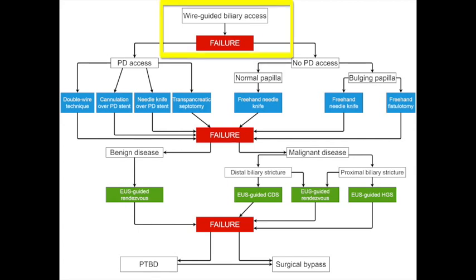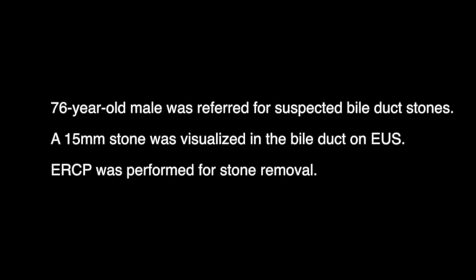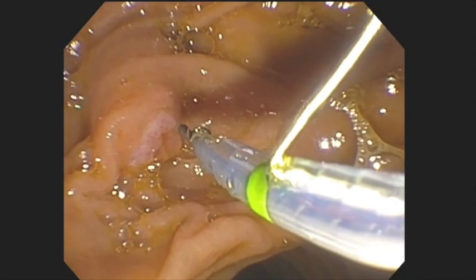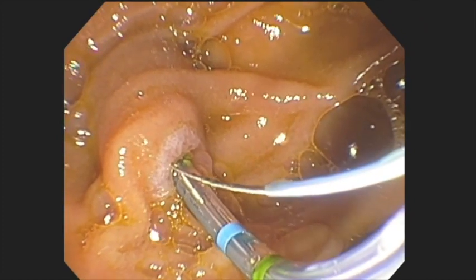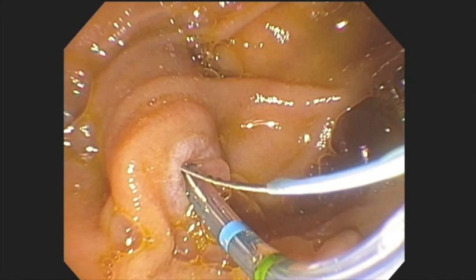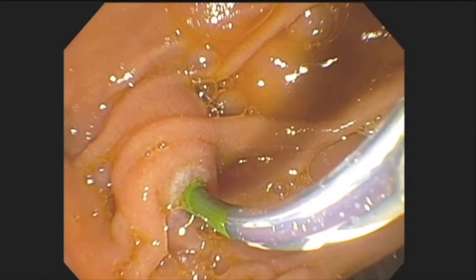Our first video demonstrates standard wire-guided biliary cannulation and biliary sphincterotomy during an ERCP. A 76-year-old male was referred for suspected bile duct stones. A 15mm bile duct stone was visualised on endoscopic ultrasound. ERCP was performed for stone removal. In the second portion of the duodenum, the duodenoscope was positioned en face to the major papilla. Wire-guided cannulation was then performed with the sphincterotome positioned at the 11 o'clock position of the orifice. Successful cannulation of the bile duct was achieved; a cholangiogram revealed a stone in the proximal bile duct. A biliary sphincterotomy was then performed.